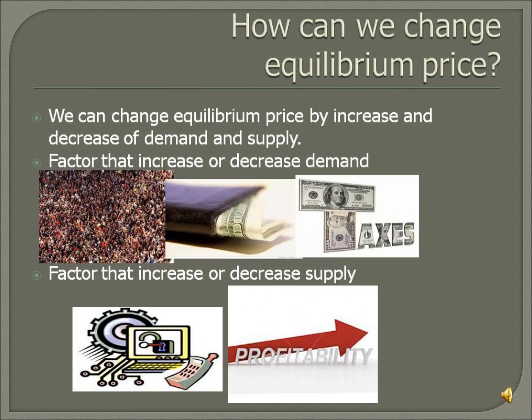How can we change equilibrium price? We can change equilibrium price by increase and decrease of demand and supply. There are many factors that increase or decrease demand: changing population, changing customers' income, changing taxes on customers' income, changing price of substitutes, changing price of complementary goods, and advertisement.